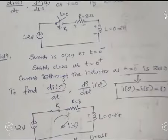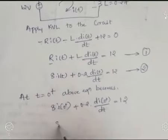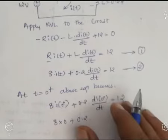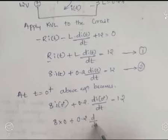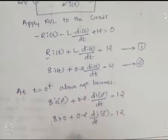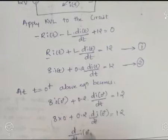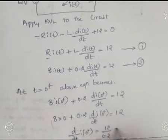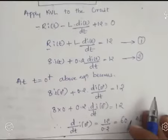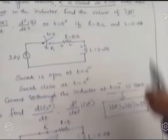Substituting I(0+) = 0 into the equation: 8 times 0 plus 0.2 times dI(0+)/dt equals 12. This simplifies to dI(0+)/dt = 12 divided by 0.2, which gives 60 amperes per second. So we have calculated two values: I(0+) = 0 and dI(0+)/dt = 60 amperes per second.